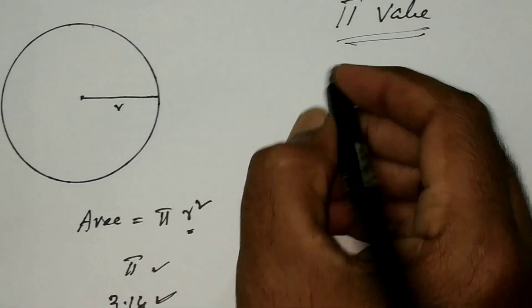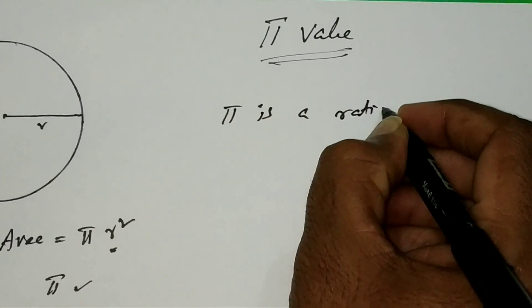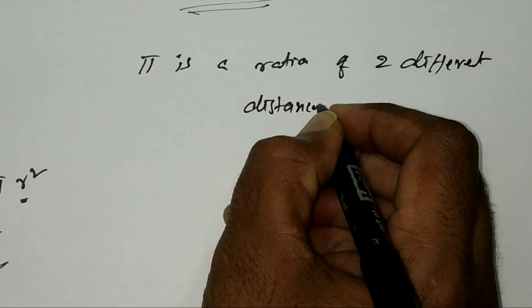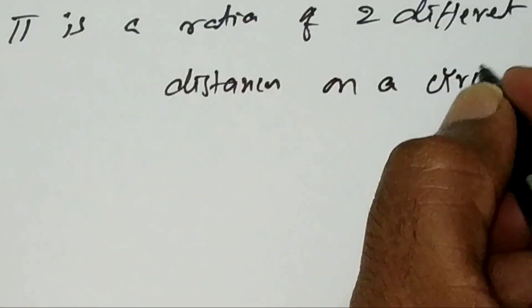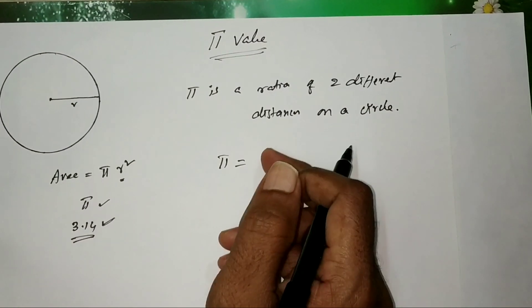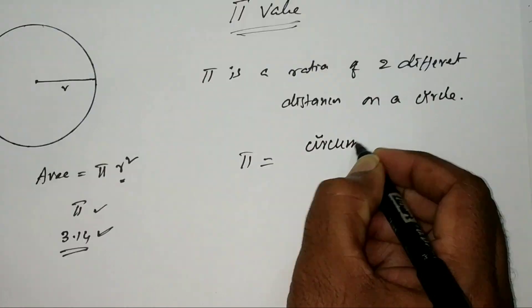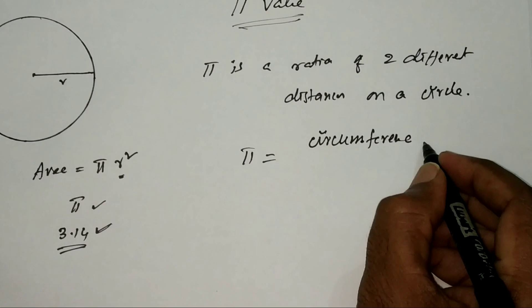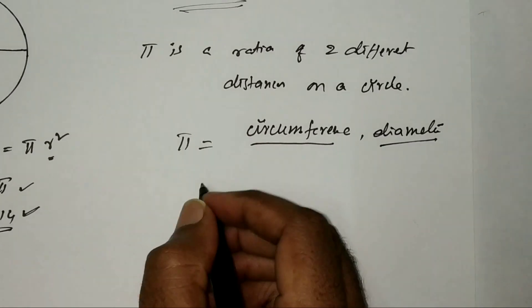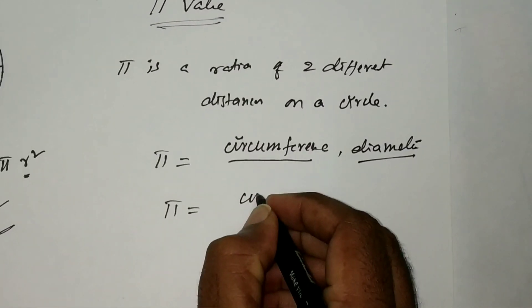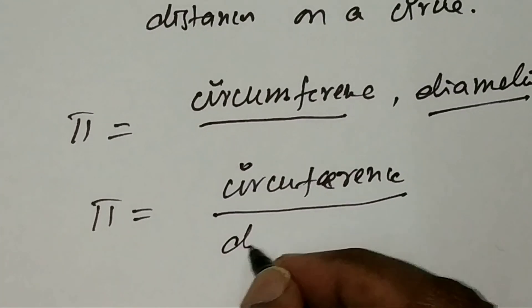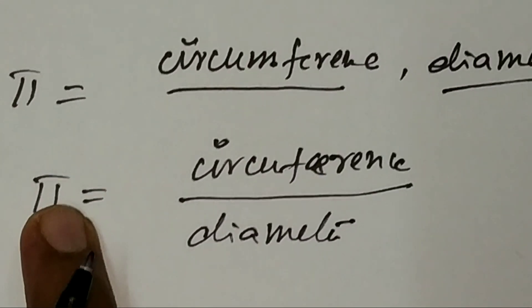What is pi actually? Pi is a ratio — a ratio of two different distances on a circle. The two distances are circumference and diameter. So pi is equal to circumference divided by its diameter.